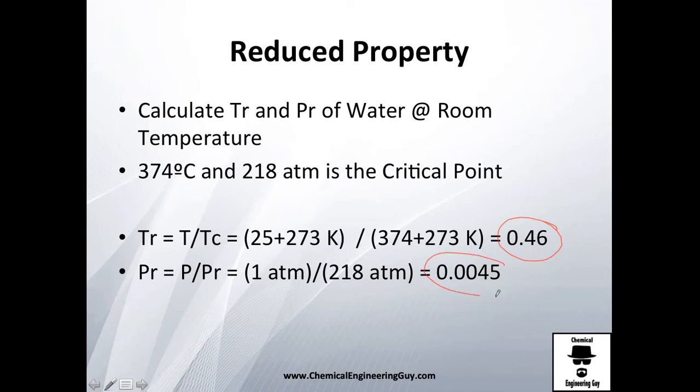You got the data here, so the reduced temperature is 0.46 and the reduced pressure is 0.0045. So if you want to compare, let's say, a CO2 gas and you have a reduced temperature of maybe one, you will see that this, compared with this critical temperature, is a little bit more heated or has more temperature. The temperature is higher compared with that of the water or what the water is experiencing.